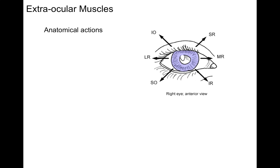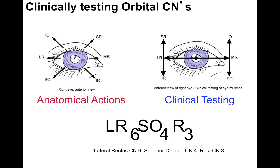The anatomical actions are now indicated in this anterior view of the right eye. This last slide shows the anatomical actions on the left of your screen, and the clinical testing of the muscles on the right side of your screen in a different pattern. At the bottom, LR6SO4R3 describes the innervation of these eye muscles. This one picture can summarize everything you need to know about eye muscles and cranial nerves. We'll now take a look at the next tutorial to discuss the clinical testing of eye muscles.